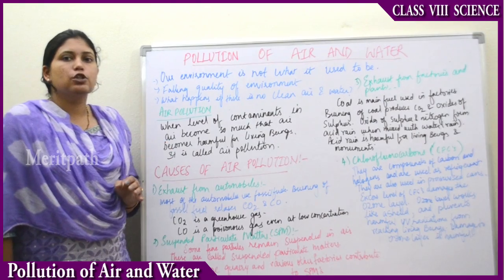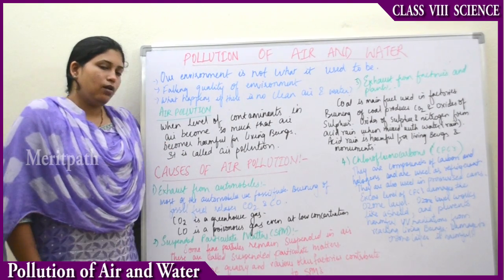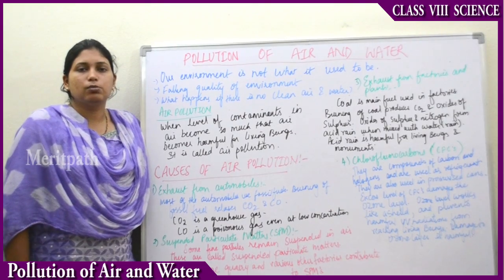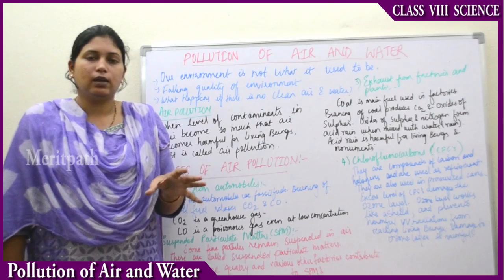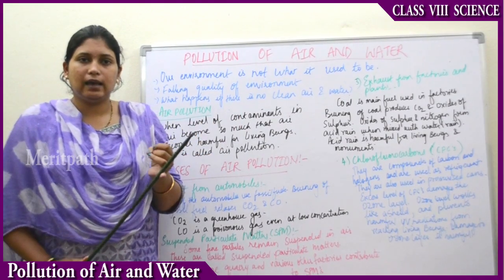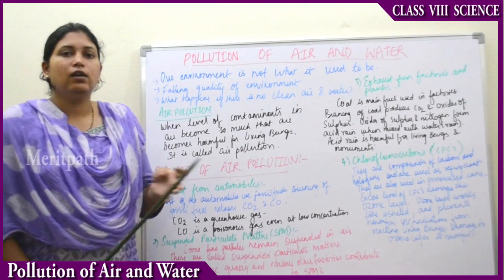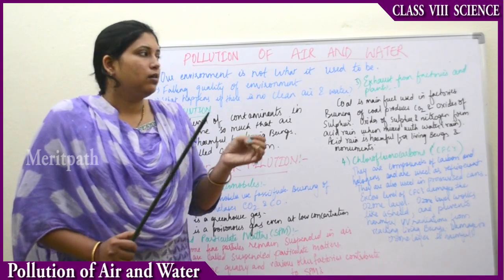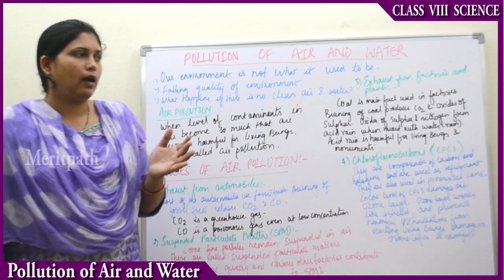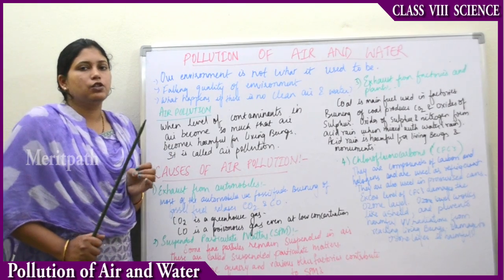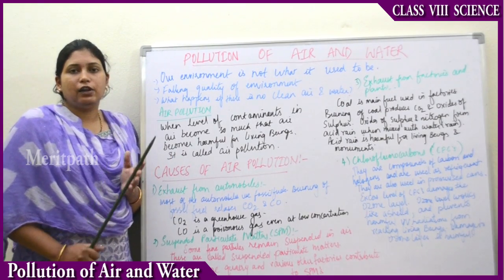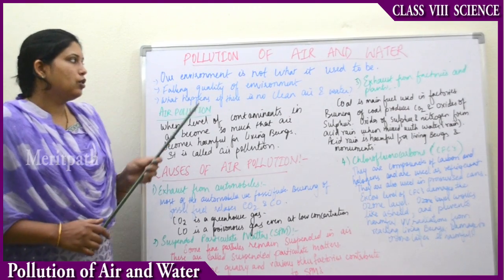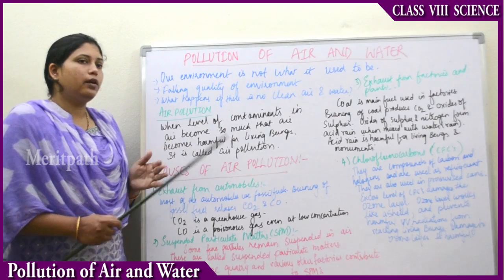In this chapter we will be studying pollution of air and water. Our elders often say that the environment is not what it used to be. Earlier there was green air, lots of trees, lots of greenery, and no pollution because fewer vehicles were used. Cars and cycles were used, not many automobiles. There were lots of parks, green trees, and pesticide-free organic food. Whereas now we have food full of chemicals and pesticides.